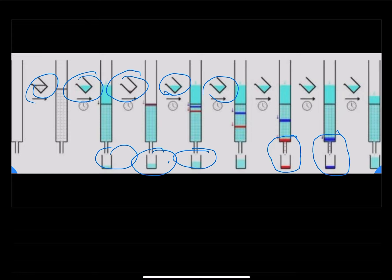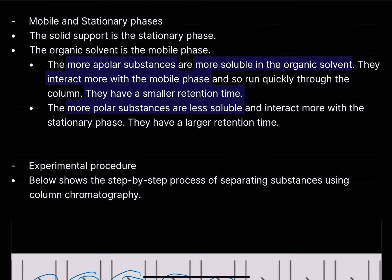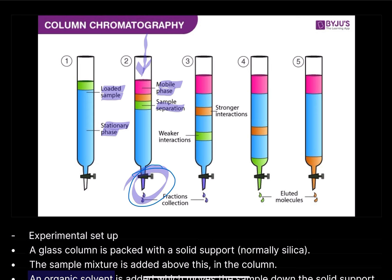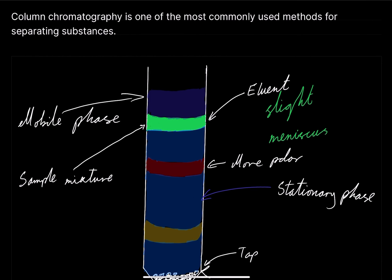In my experience with the exams, they don't ask too much about the detailed method of column chromatography — but ask your teacher to be certain. Basically, they want you to understand what the mobile and stationary phases are, what it means for a compound to pass down the column more quickly, and how it elutes. You might also see a slight meniscus at the top, which is just due to the compound's attraction to the walls of the container.